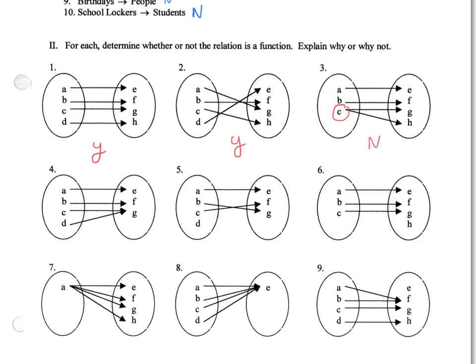Number four is a yes. Every element in the domain corresponds to one element in the range. Number five is a no, because we've got an element in the domain that isn't corresponding to anything. Six is a yes. Here we've got an element in the range that doesn't have a correspondence. But that's okay, because the definition says nothing about the range. As long as every element in the domain corresponds to one element in the range, we're good.